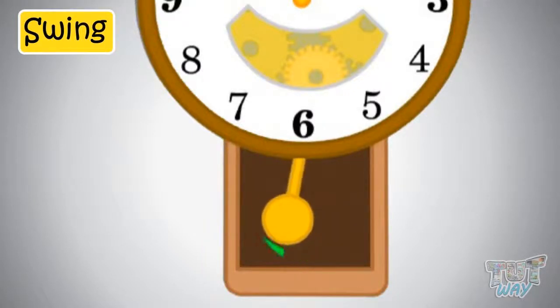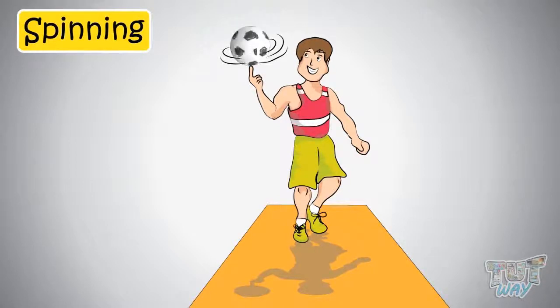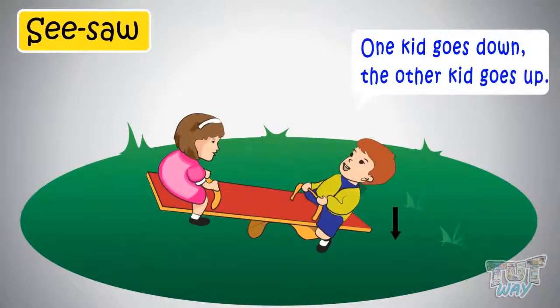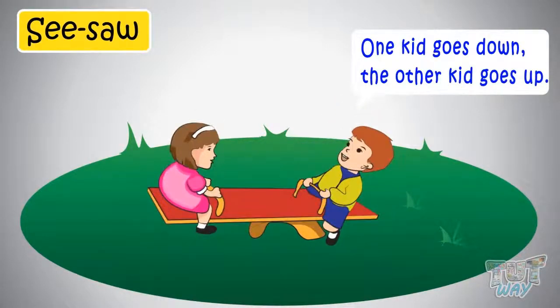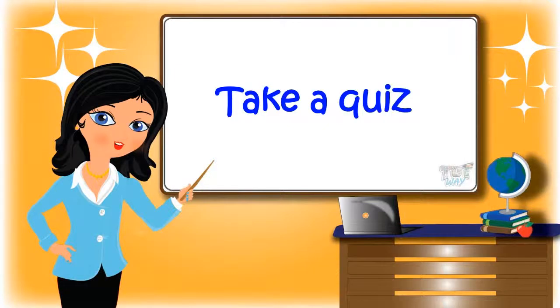Now let's see another movement — it is spinning. This is the spinning of a ball. Here we have another movement — seesaw — when one kid goes down and the other kid goes up. So kids, today we saw so many types of movements. Now go ahead and take a quiz to learn more.